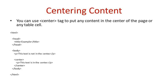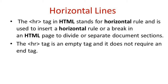We can also align text or paragraphs to the left, right, center, or justified. There are four types of alignment: left aligns text from the left side, right moves text to the right, center places content in the middle of the page, and justified. Next is the HR tag, which stands for horizontal ruler. It is used to insert a horizontal line to divide or separate document sections. The HR tag is an empty tag, so it does not require an ending tag.